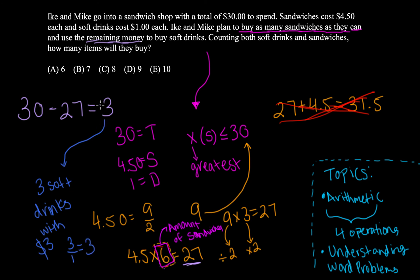So now that we have our two separate numbers, we have our soft drink value, and our sandwich value, we can add them up to find the total amount of items. So 3 plus 6 is equal to 9, and that would be our final answer.